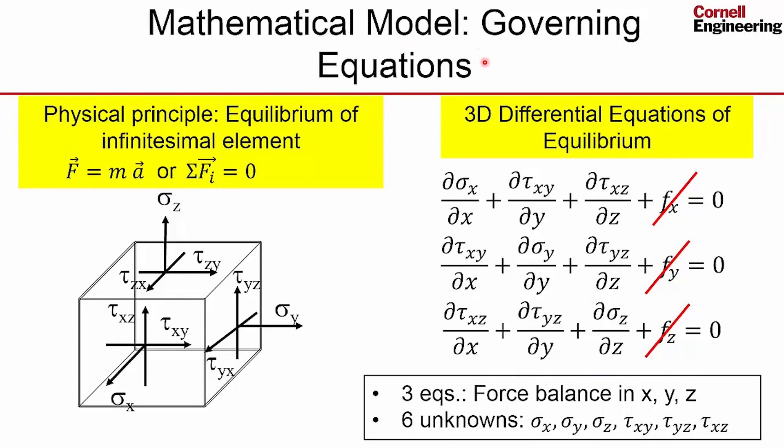And then we have to solve the governing equations over those four domains. And the governing equations are the same as in the bike crank case. So they're based on equilibrium of an infinitesimal element, and you have force balance in the x, y, and z directions, and you get three equations, but you have six unknowns, three normal stresses and three shear stresses. So we need to bring in additional equations to close the equation set.